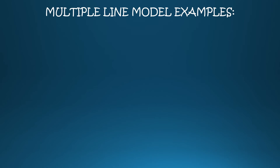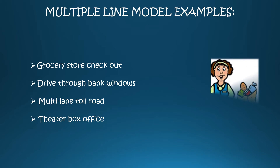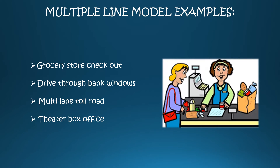Some examples of multiple line models include grocery stores with multiple checkouts, such as regular and express checkouts, multiple drive-through bank teller windows, and multi-lane toll booths. Multiple line queuing provides customers the most responsive service for their requests. From a business's perspective, they are able to provide services to a higher volume of customers by allocating more resources that can handle the additional requests for service. An example is a grocery store that offers an express checkout lane for customers purchasing only a few items, allowing the store to process more transactions and achieve a higher sales volume overall.